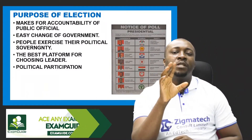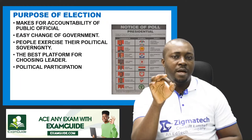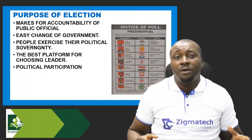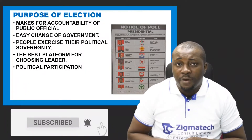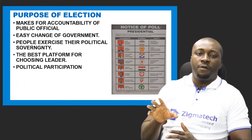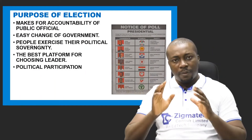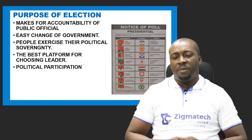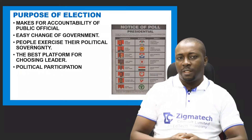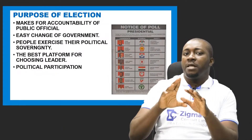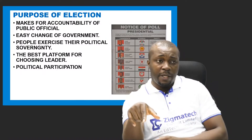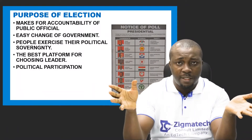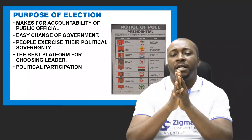During elections, people exercise their political sovereignty — the absolute power that the people have — and that is why candidates humble themselves during the election period. Election is also the best platform to choose a leader. It also promotes political participation: during election people participate in different ways — they can be contestants, join political parties, support political parties, vote, engage in debates, and attend rallies and campaigns of political parties and their candidates. So elections promote and boost political participation of citizens.